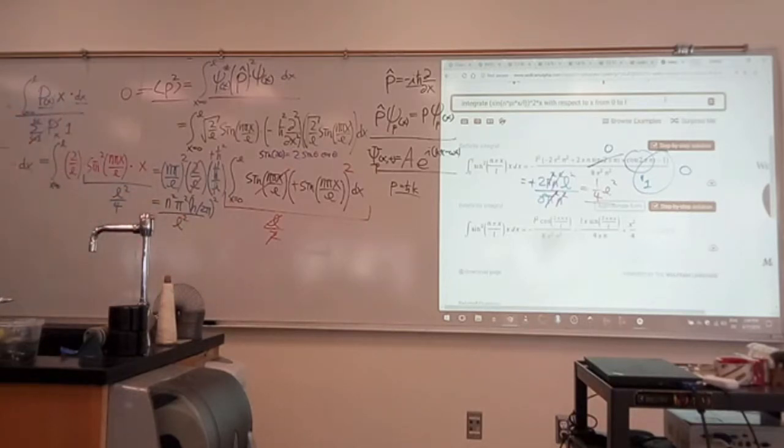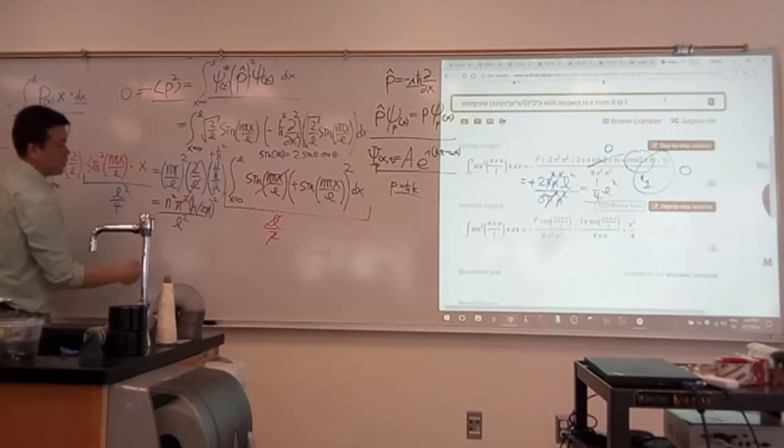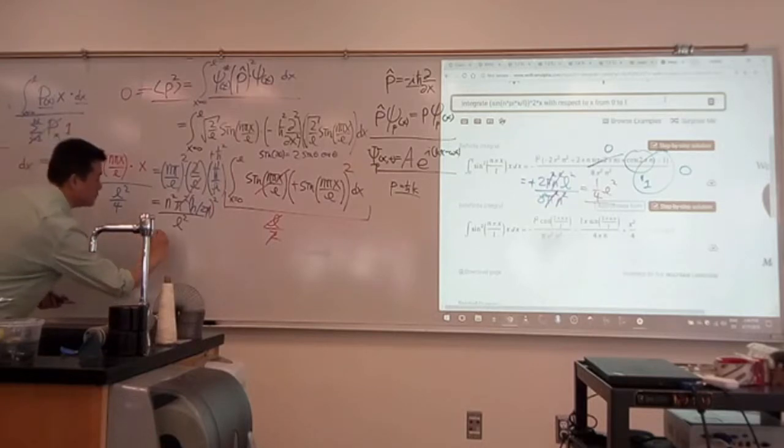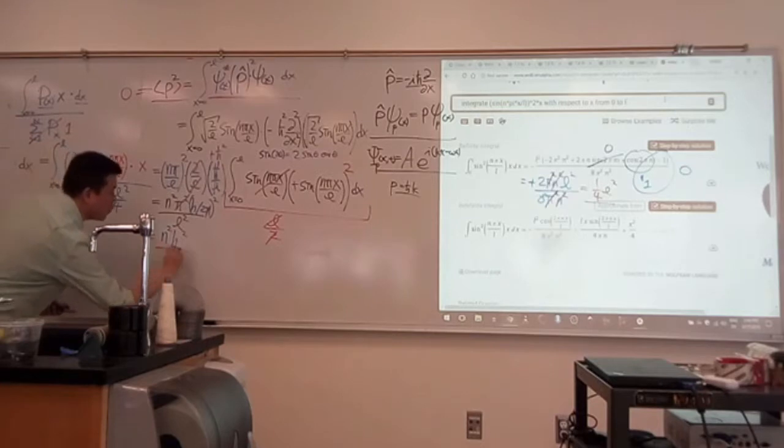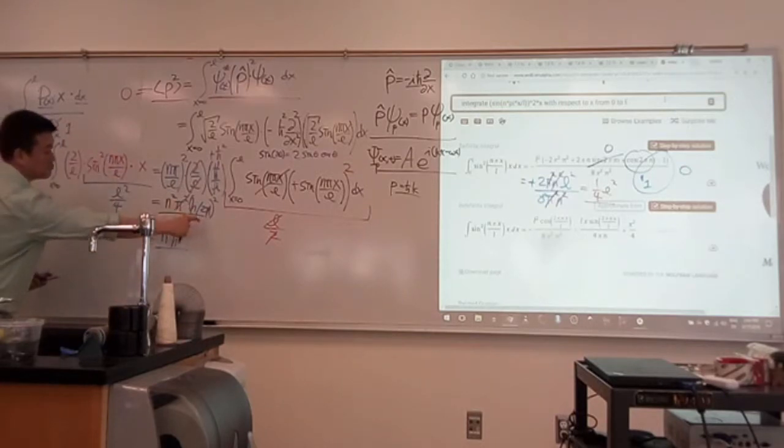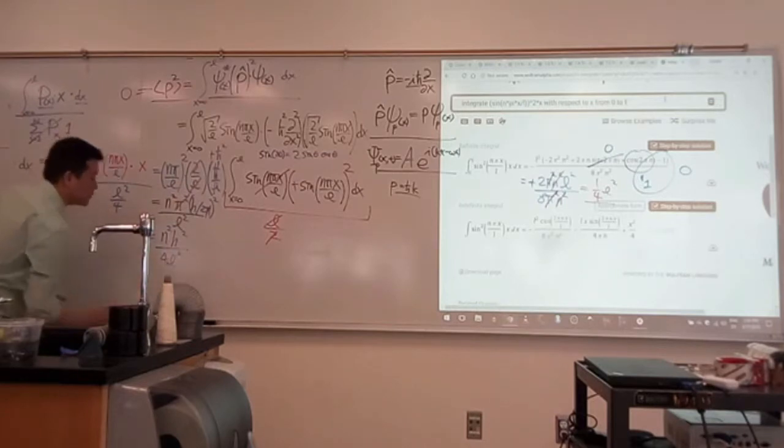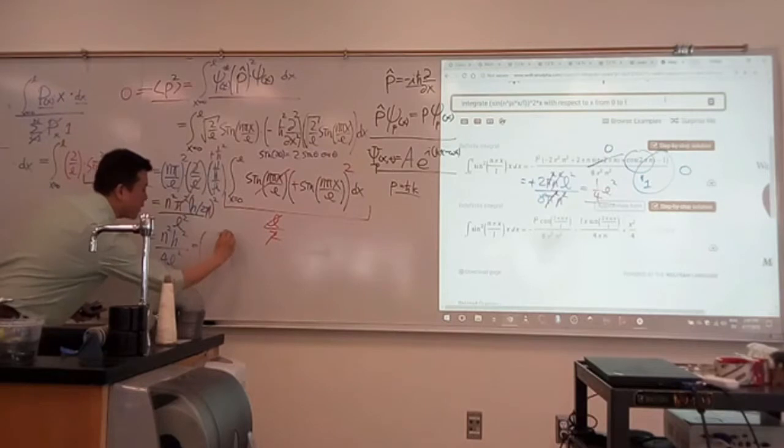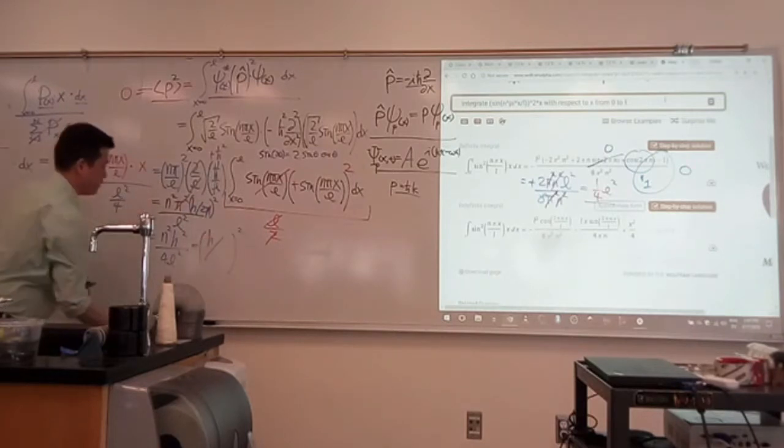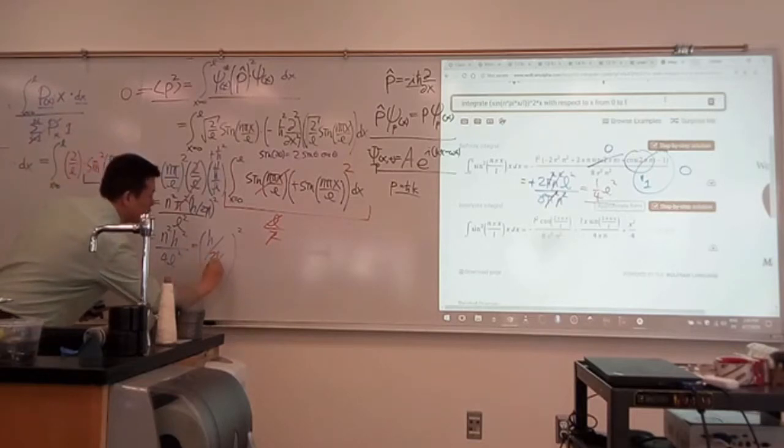So if you write it that way, π² cancels π², L² cancels. So the simplified version is N²h² over 4L². Now if I want, I can put it into this form: the square of h over 2L over N.